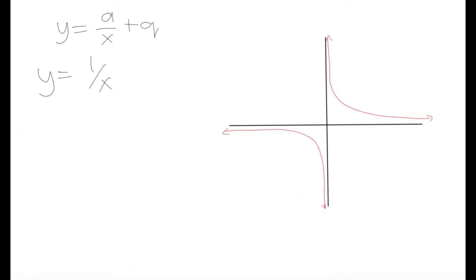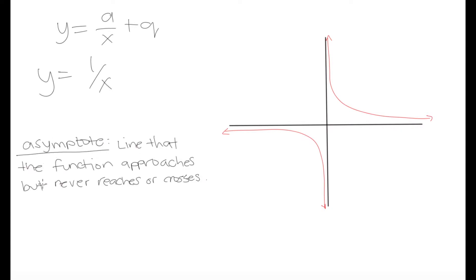Let's define what an asymptote is. An asymptote is a line that the function approaches but never reaches or crosses. We have two such lines in this function. The first is the y-axis, where x = 0 — that is our first asymptote, a line our function will approach but never cross. Our second asymptote is the x-axis, where y = 0. That is our horizontal asymptote.